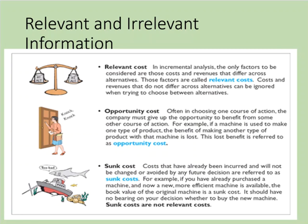Here are some examples and basic terminology. Relevant costs are going to be incurred in the future — for example, if you're deciding to buy a new car, those costs cannot have been incurred in the past to be considered relevant for decision making. Relevant costs differ between alternatives. For example, if we are buying a new car, each car will have a different invoice price, sales tax, and insurance premium. The differences between your two top choices are the relevant costs, because they affect your decision of which car to purchase.